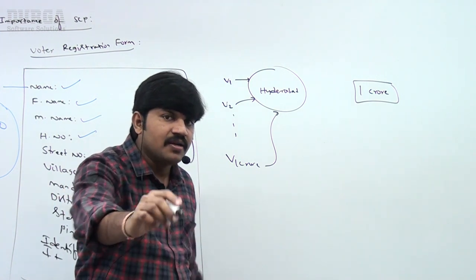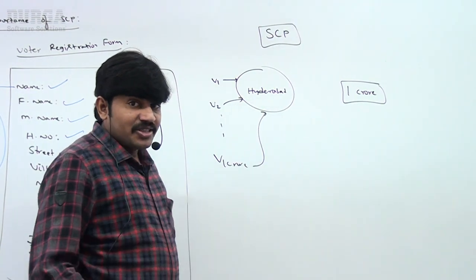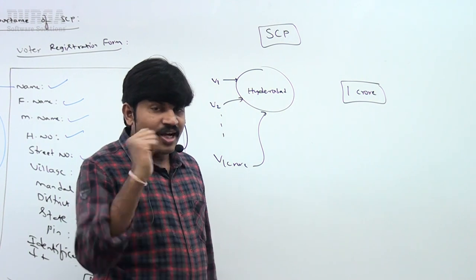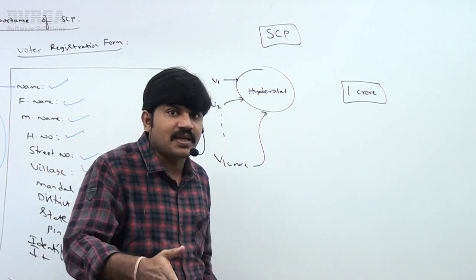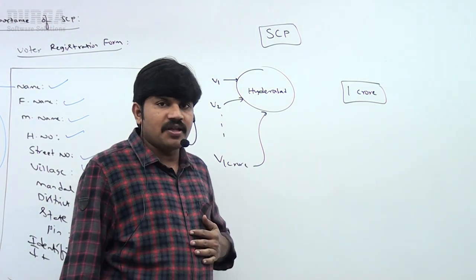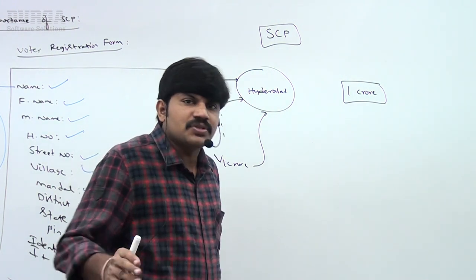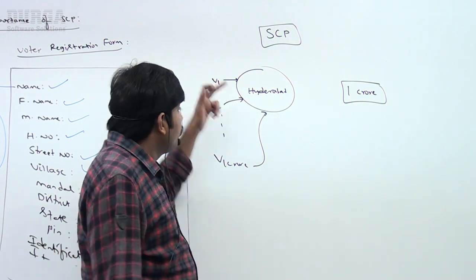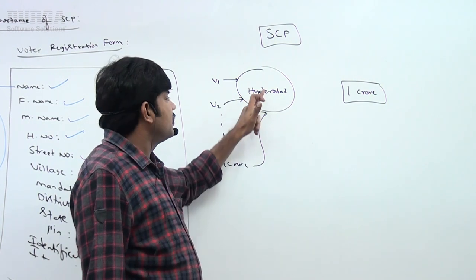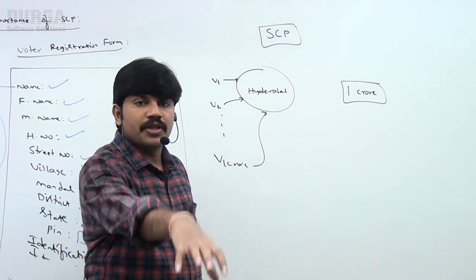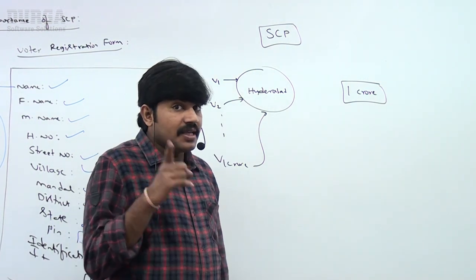How can you solve this problem? Very simple — create only one object and share the same object for all 1 crore members. In Java, this is possible because of the SCP concept. How many Hyderabad objects will be created? Only one object. If any other person says their city is also Hyderabad, you can reuse the same object — you are not required to create a new object. V1, V2, V3, and so on up to V1 crore: for all these 1 crore references, the same Hyderabad object is going to be reused.